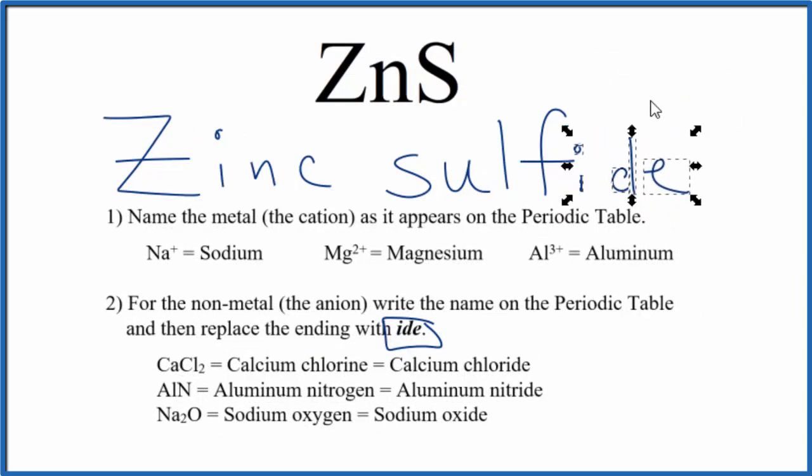And the name for ZnS, that's zinc sulfide. So although zinc is a transition metal, it has a 2+ ionic charge. Sulfur has a 2-. Since zinc always has that 2+ ionic charge, we don't need to write Roman numeral II here for zinc sulfide. We just call it zinc sulfide.